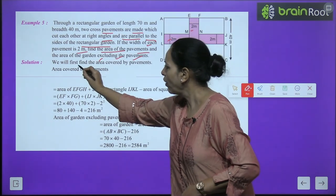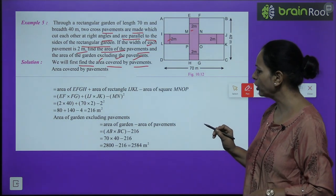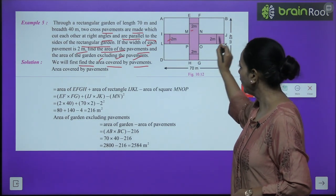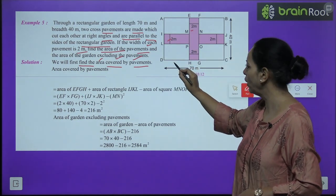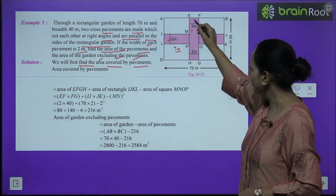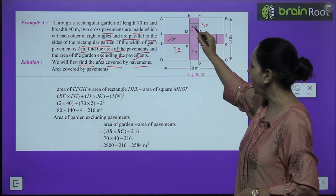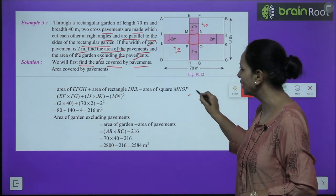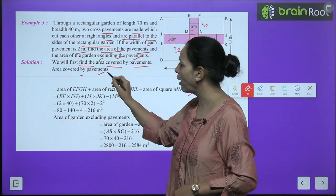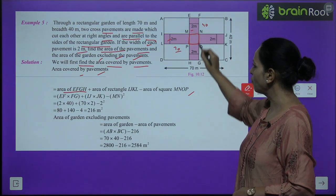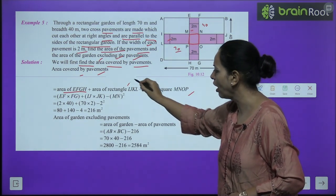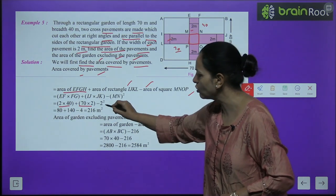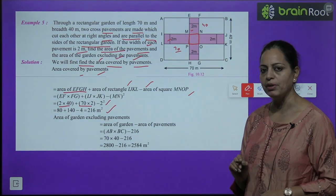Area covered by the paths: path parallel to length = 70 × 2 = 140 m²; path parallel to breadth = 40 × 2 = 80 m². The common square (where they cross) = 2 × 2 = 4 m². Total area of paths = 140 + 80 − 4 = 216 m².